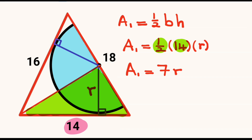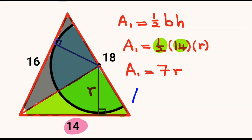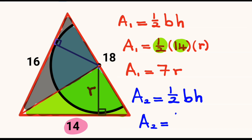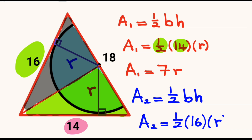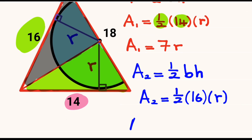We calculate the area of the second triangle, which we shade in gray, and we call it Area 2. Area 2 will be equal to half multiplied by base multiplied by height. The base is equal to 16 and the height perpendicular to the base is also equal to the radius R. So Area 2 equals half multiplied by 16, which is 8R.